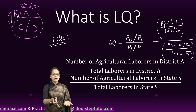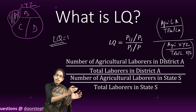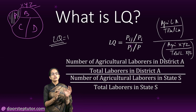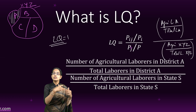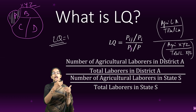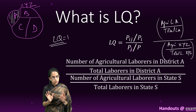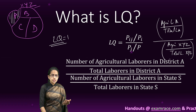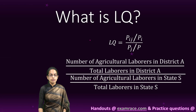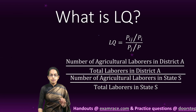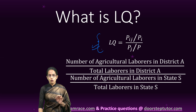So it implies that there is less concentration of agricultural laborers in district A as compared to state XYZ. This was a simple example to explain the concept. Let me now explain it through a formal formula.